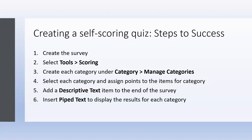To create a self-scoring quiz in Qualtrics there are six different steps. You need to: create the survey; select Tools to add the scoring features; create the different categories — in this assessment we have four: self-awareness, internalized moral perspective, balanced processing, and relational transparency; assign points to those categories; add descriptive text at the end of the survey to show results; and then pipe the text so the scores display. Let me switch back to Qualtrics.